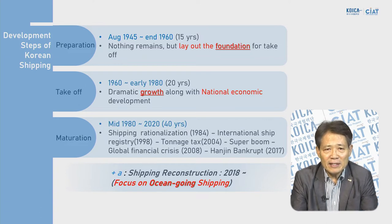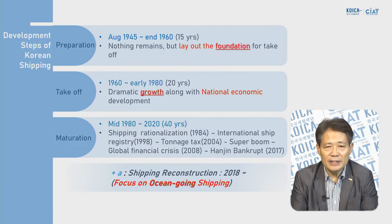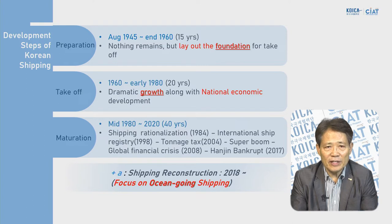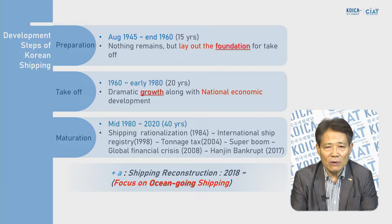The developmental steps of Korean shipping: I divided the development of Korean shipping into three different periods. First, the preparation period during 1945 to the end of the 1960s — about 15 years. Nothing remained in the Korean Peninsula to start the shipping business after World War II and the Japanese-controlled period. To make matters worse, Korea went through the three-year Korean War from 1950 to 1953.